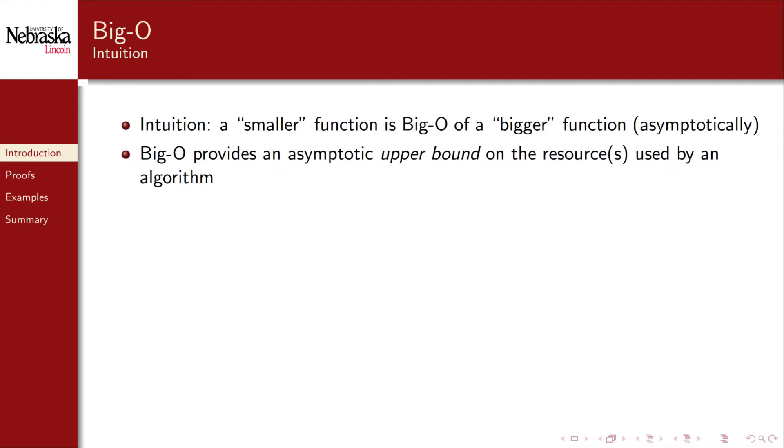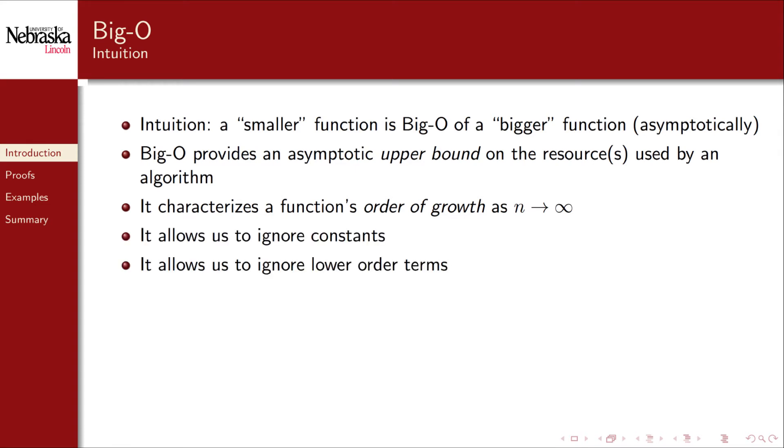The intuition behind big O is that an asymptotically smaller function is big O of an asymptotically larger function. It provides a way to define an upper bound on the resources used by an algorithm, which matches our desire for a worst case analysis. Big O provides a way to characterize the order of growth of a function. It allows us to ignore constants and ignore lower order terms, as the growth rate is more influenced by the highest order term. These are exactly the properties that we wanted for a more abstract analysis independent of any particular machine or language.